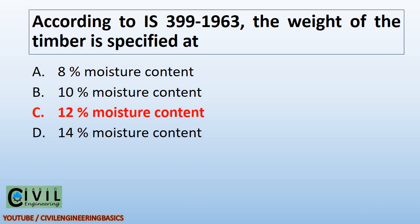According to IS-399-1963, the weight of the timber is specified at 12% moisture content.